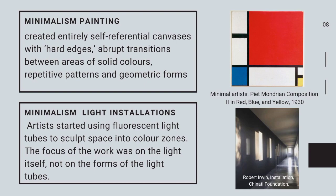In minimalism light installations, artists started using fluorescent light tubes to sculpt space into color zones. The focus of the work was on the light itself, not on the forms of the light tubes. Light installations use the way light reflects and forms geometrical patterns and different colors to sculpt space into color zones.